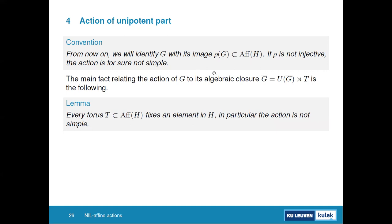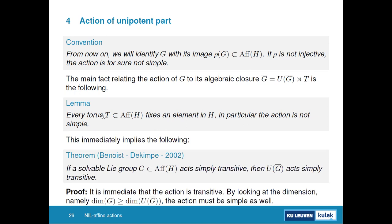Marcos and I proved the converse also works, provided the dimensions are equal — which is a mild assumption since it must hold for any simply transitive action anyway. This gives us a complete equivalence: going from G to U(Ḡ) simply transitive is equivalent. In practice, to check whether an action is simply transitive, you compute the algebraic closure, look at its nilpotent part, and verify the projection onto H is a bijection.